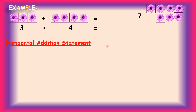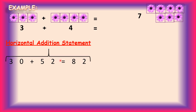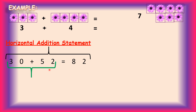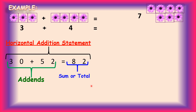Let's talk about horizontal addition first. A horizontal addition statement means when the addition statement is written in a straight sleeping line — we call it a horizontal addition statement. Here, numbers 30 and 52 are add-ins because we are adding 30 and 52. So 30 plus 52 is equal to 82, and 82 is our result, our answer — this is the sum or total.